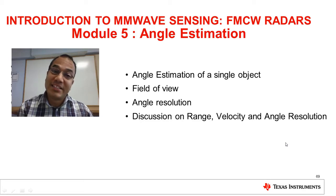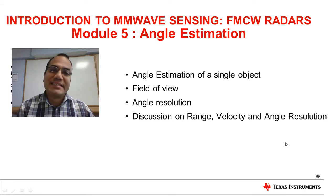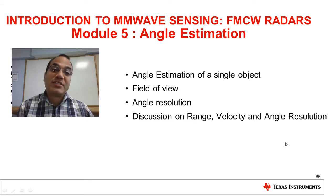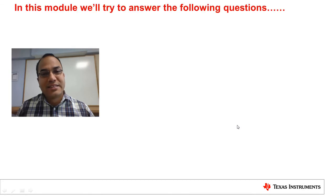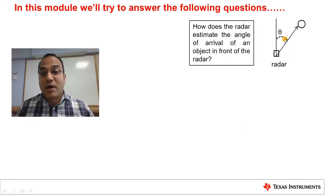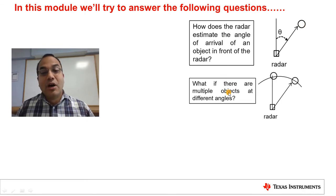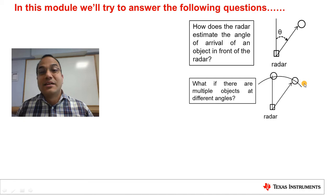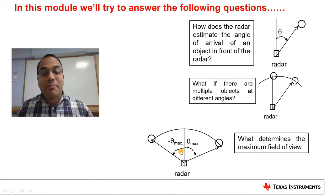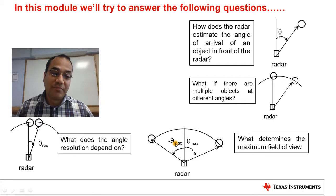Welcome to this fifth module in this introductory series on FMCW radars. The past four modules have focused on sensing along two dimensions, range and velocity. This module is going to focus on sensing along the third dimension, namely angle. The questions we are going to answer are: how does the radar estimate the angle of arrival of an object? What if there are multiple objects at different angles but possibly at the same range and relative velocity? What determines the maximum angular field of view, and what does the angular resolution depend on?